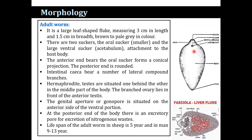The ventral sucker is responsible for attachment to the host body. The anterior end bears an oral sucker that forms a conical projection, and the posterior end is rounded. The intestinal caeca bear a number of lateral compound branches. As a hermaphrodite, the testes are situated one behind the other in the middle part of the body. The branched ovary lies in front of the anterior testis. The genital aperture or gonopore is situated just anterior to the ventral sucker. At the posterior end of the body, there is an excretory pore for excretion of nitrogenous waste.